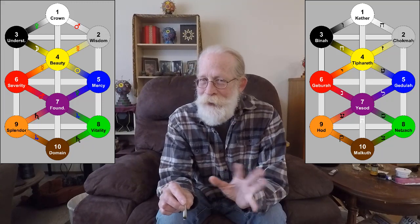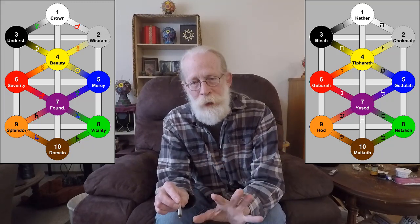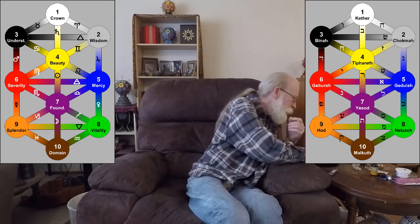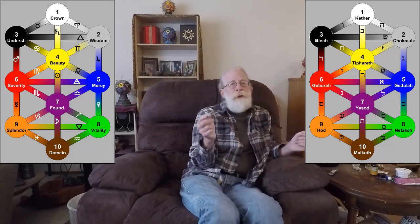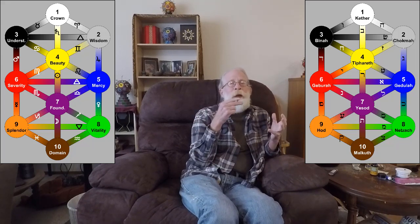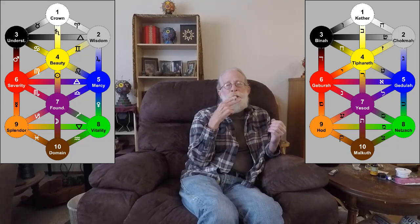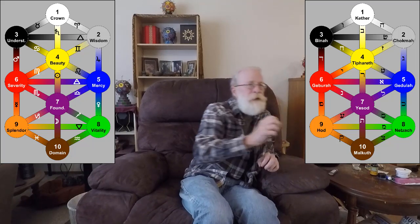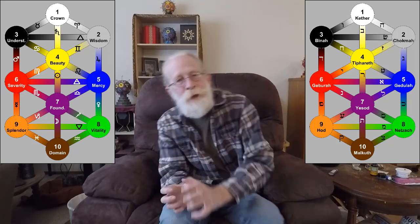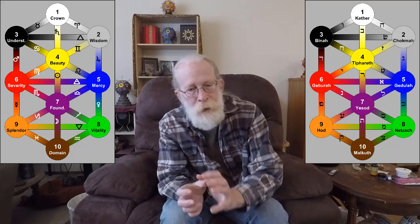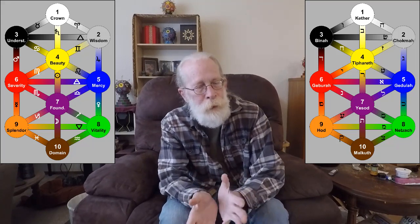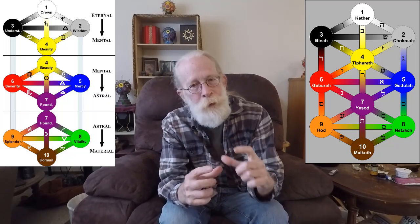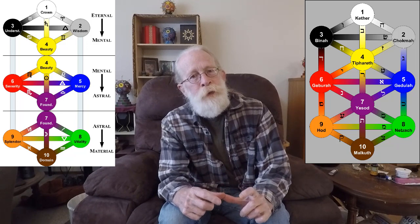These diagonal paths introduce an incredible amount of motion to the symbol, and they make it a truly stable structure with this inclusion of the diagonal paths. So we have three sets of four.